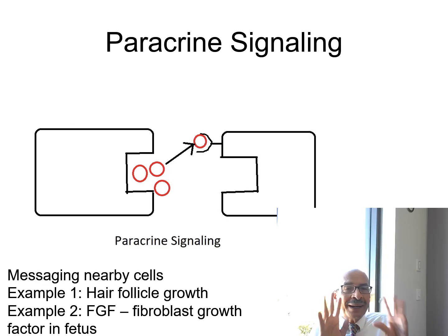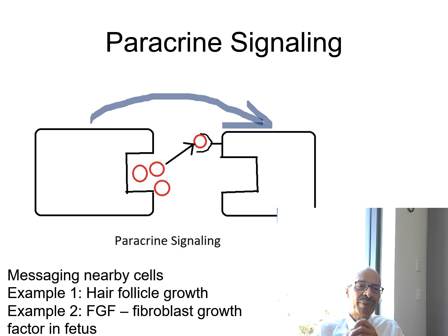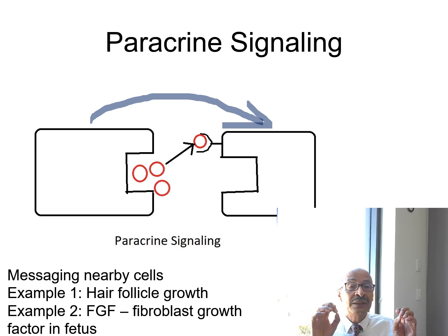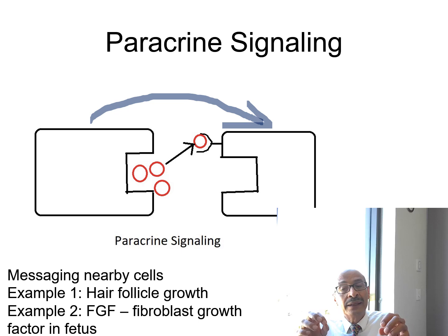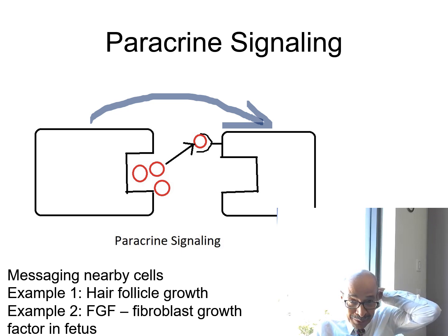There is also paracrine signaling inside the body. Here, one cell sends a signal to a nearby cell — that's where the name 'paracrine' comes from. For example, hair follicle growth is a principal case for paracrine signaling: if a hair follicle grows in one spot, it can signal a nearby cell to grow more hair follicles. This is not a technology we are close to perfecting.